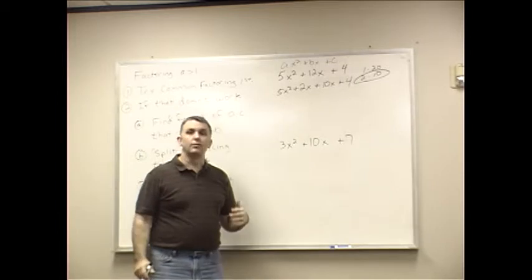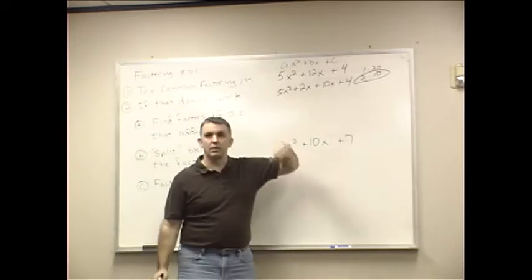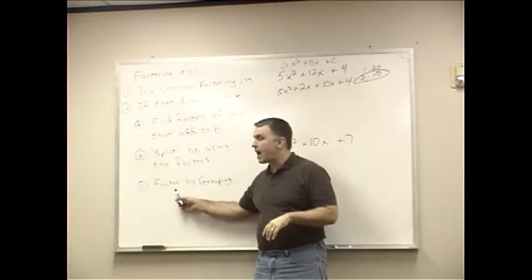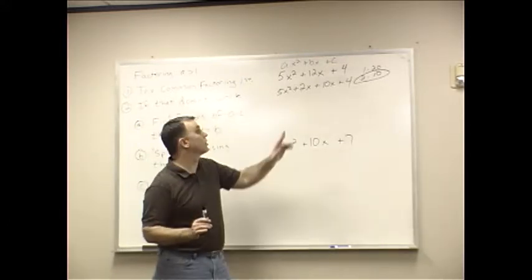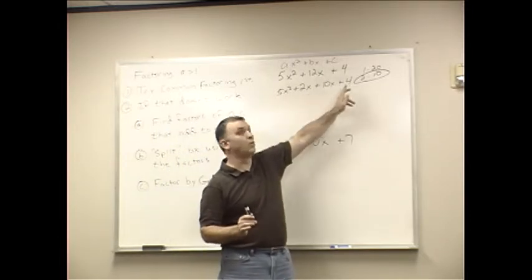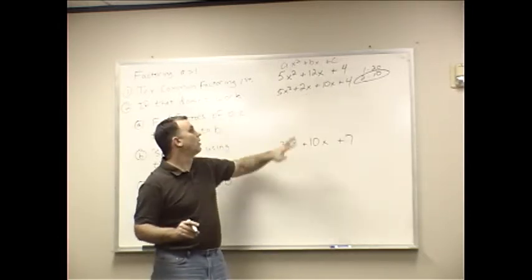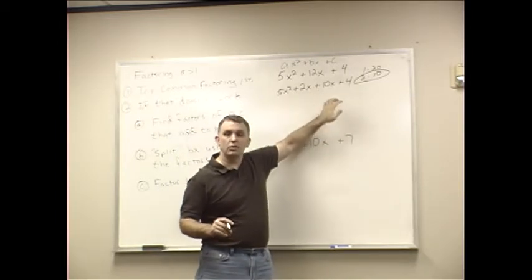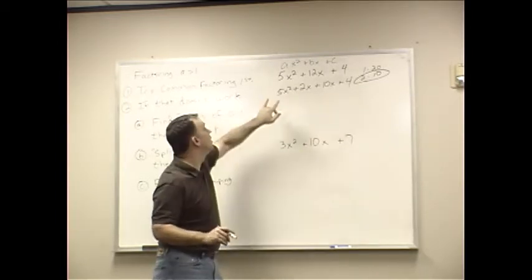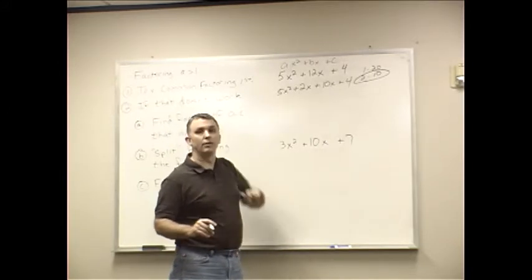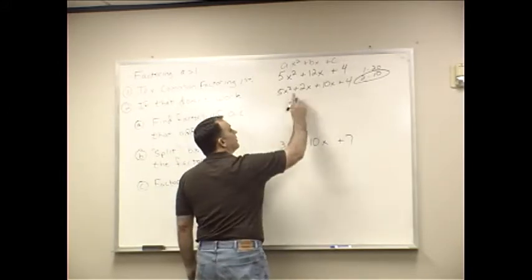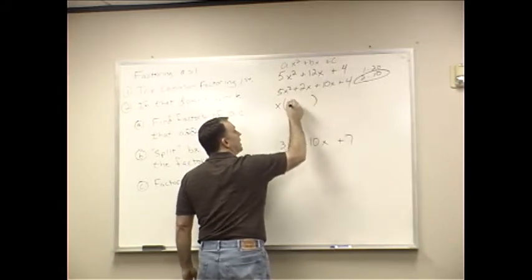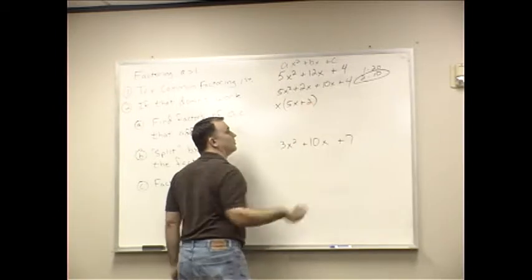Again, remember, this is just mechanics. I'll give you the explanation in class on why this works. Now, factor by grouping. Remember, grouping is the one that has four different terms. Well, I've got four terms here. You do common factoring to the pairs, and then you do common factoring again. So 5X to the second plus 2X. What do they have in common? They have an X in common. And when I divide both of these by X, I get 5X plus 2.